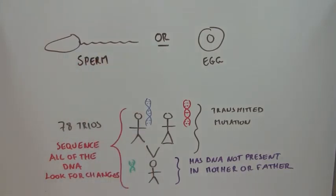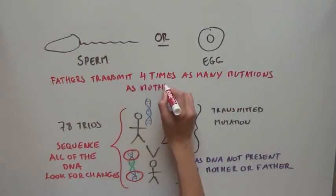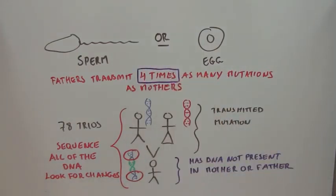By looking at the DNA sequence around the mutation, the scientists were able to say that fathers were transmitting to their children four times as many mutations as the mothers. But that's not all.